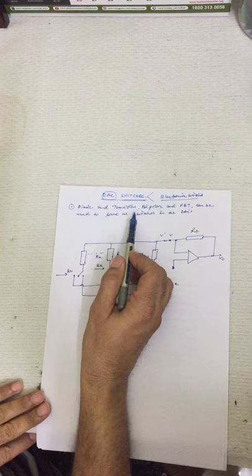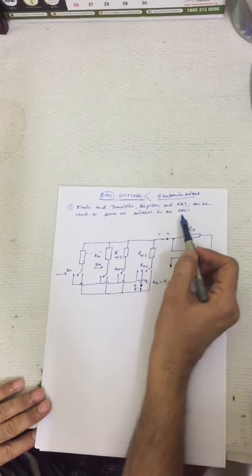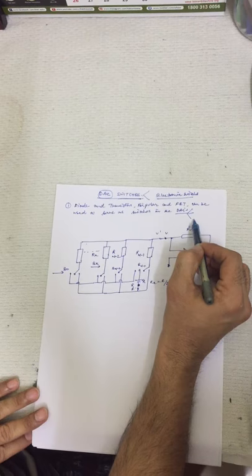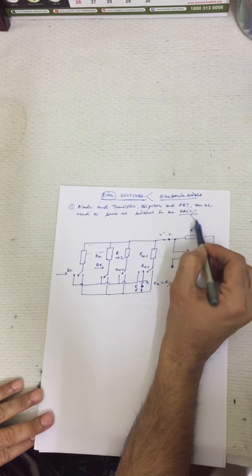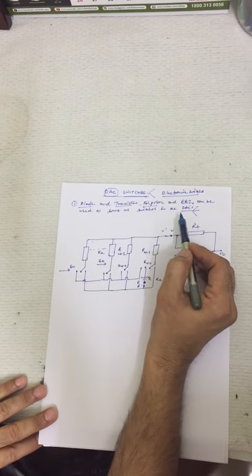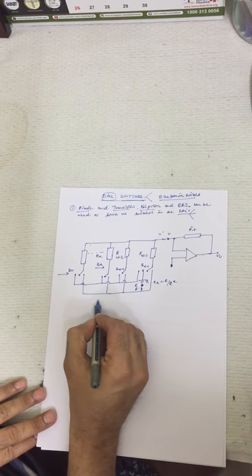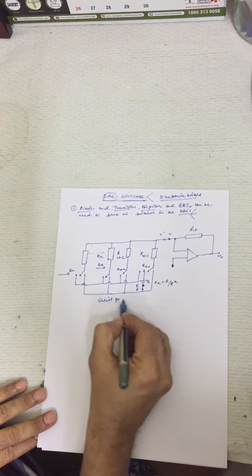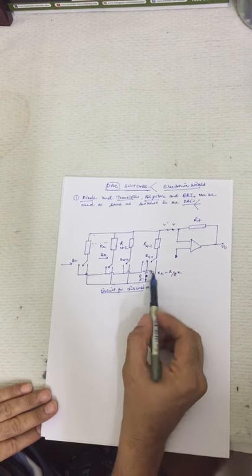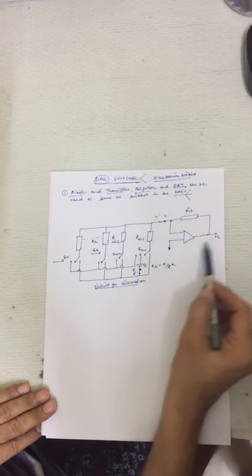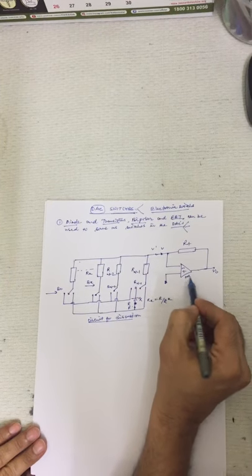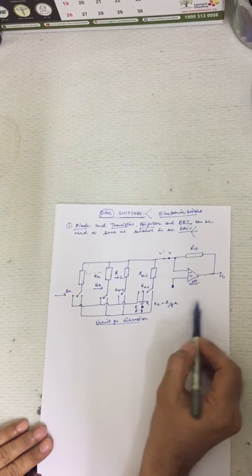We find that diodes, transistors — bipolar and FET — can be used to serve as switches in DACs. We have studied many types of DACs: weighted resistor DACs, current resistor DACs, voltage resistor DACs. In different types of DACs we require different switches. The circuit we will discuss consists of binary input, output, op-amp, minimum number of resistances, and minimum number of switches.